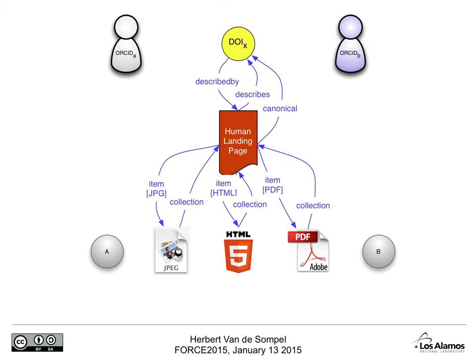Hey, if a machine now happens on the HTML page, it can follow the collection link and then the canonical link to understand that this HTML page resorts under a DOI. That's very important — for example, to be able to collect all annotations made to a DOI-identified asset. Let's wrap it up by adding author relations from the DOI to the ORCIDs.